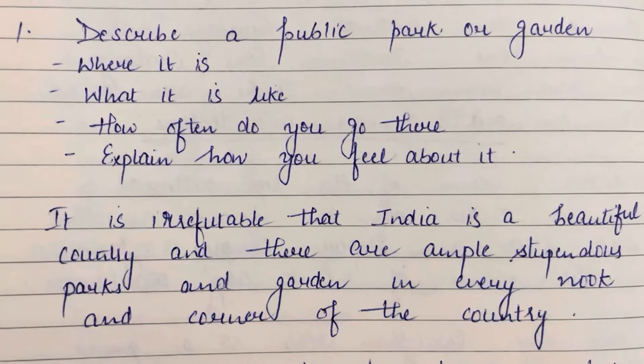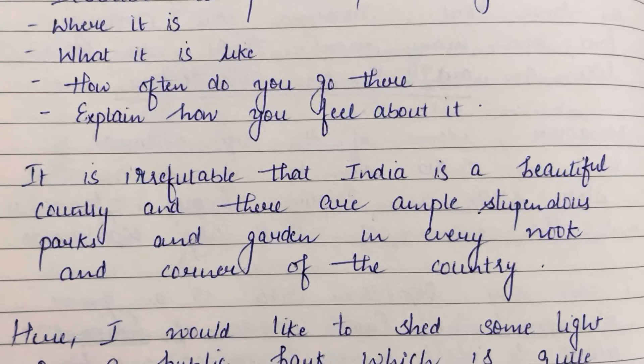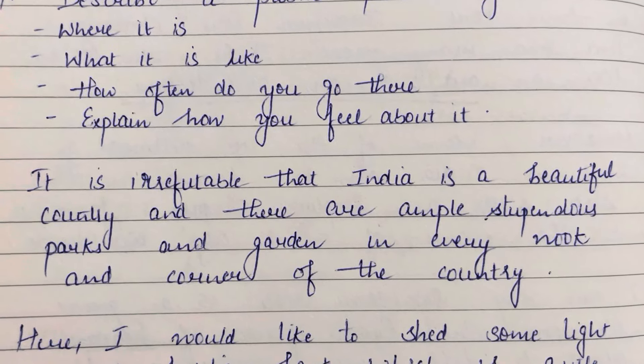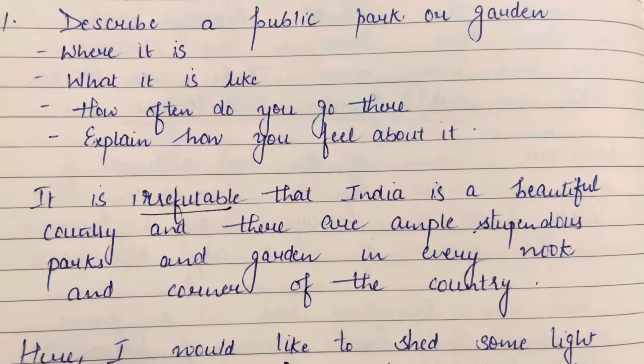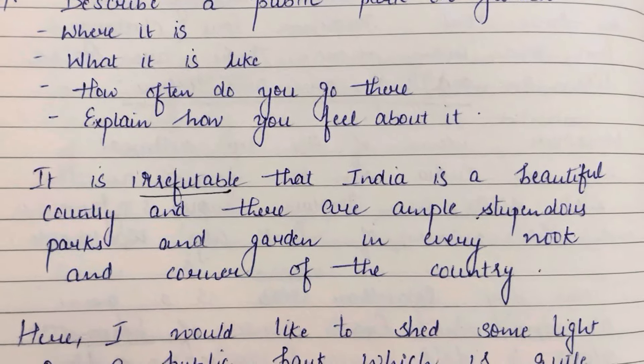It is irrefutable that India is a beautiful country and there are ample stupendous parks and gardens in every nook and corner of the country. 'Irrefutable' means something that cannot be denied. 'Stupendous' means fabulous. 'Every nook and corner' means har kone mein — throughout the entire country.